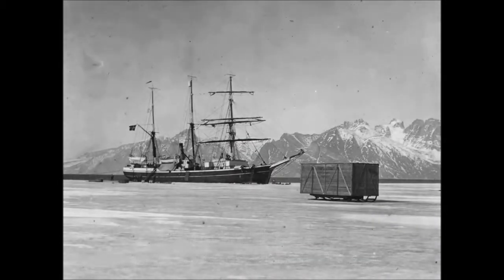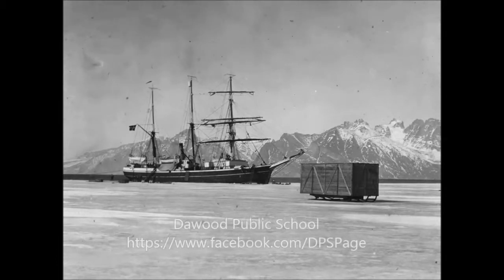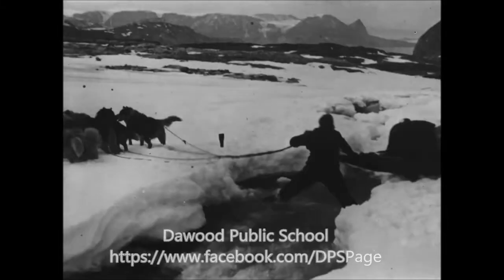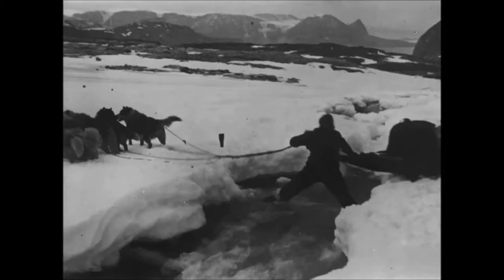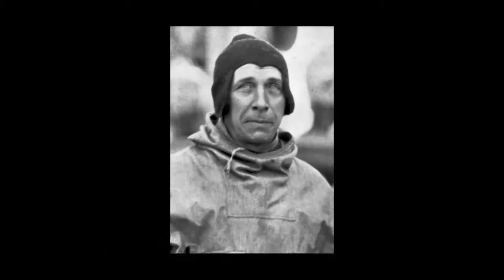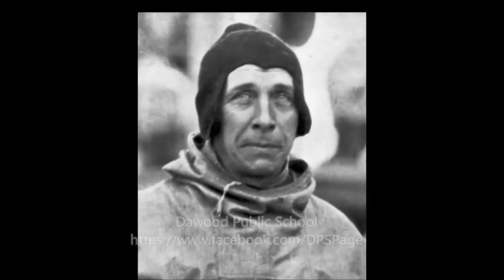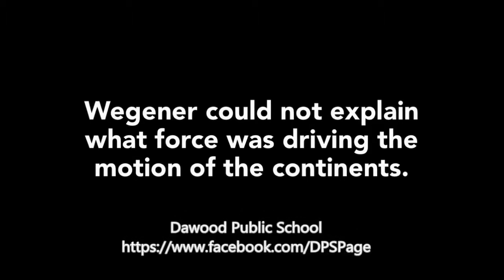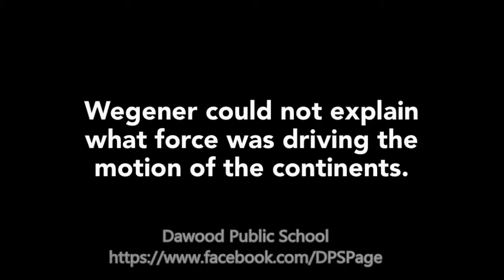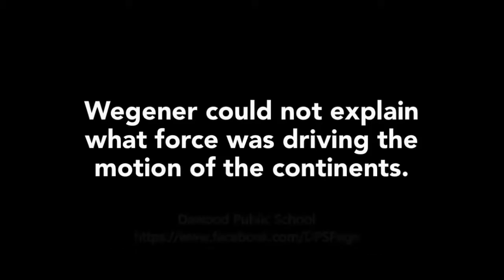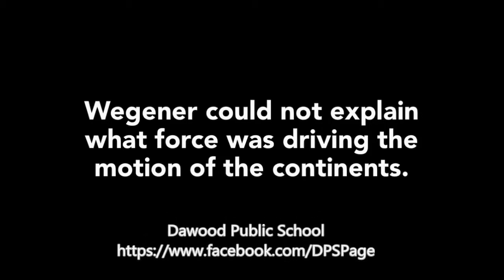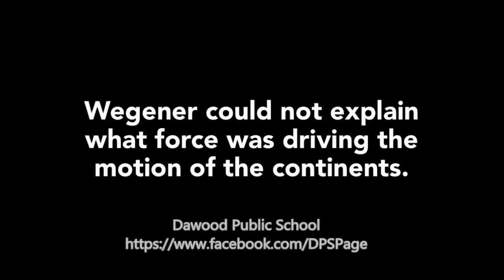Later in his life, Wegener took an expedition to the North Pole to gather more evidence to support his theory of continental drift. Unfortunately, on a very cold, dark, stormy day, Wegener set out on an expedition to gather food for his colleagues and was never heard from again. He died of exposure and was frozen in the ice — his body is actually still there today. Sadly, Wegener was never able to explain what made the continents move, what made the supercontinent rip apart. He died before his theory became accepted by the scientific community, never getting to see his life's work come to fruition.